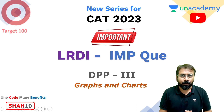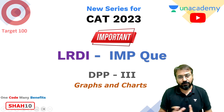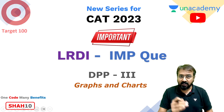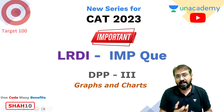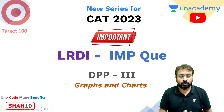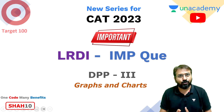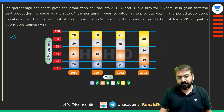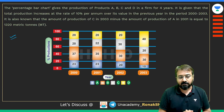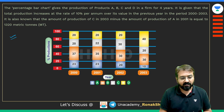Hi everyone, welcome to the third video of LRDI most important questions for the upcoming CAT exam. In this video I'll provide you one set for practice from graphs and charts — calculation-based. The calculation is slightly tricky in this particular set, so you can try it and then proceed with the solution. This is a percentage bar chart giving production of products A, B, C, D over a four-year period, with some additional information.